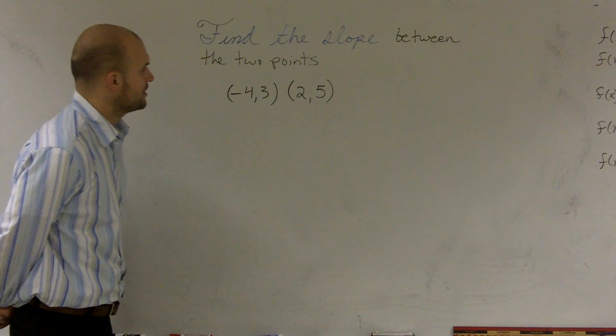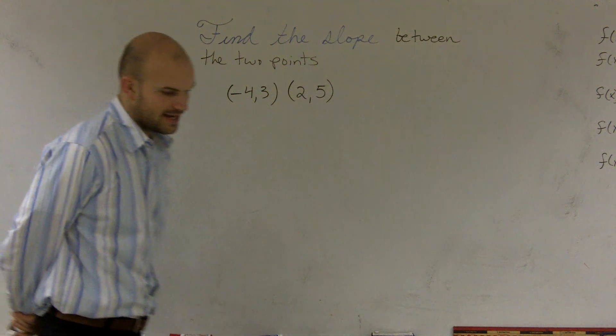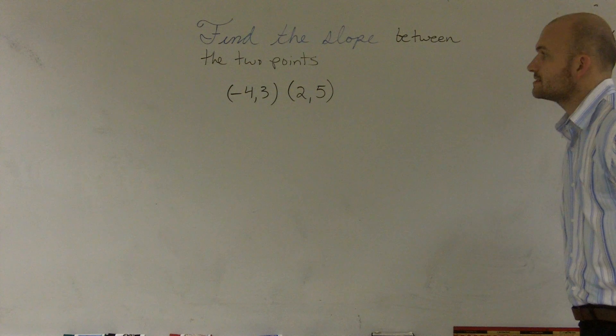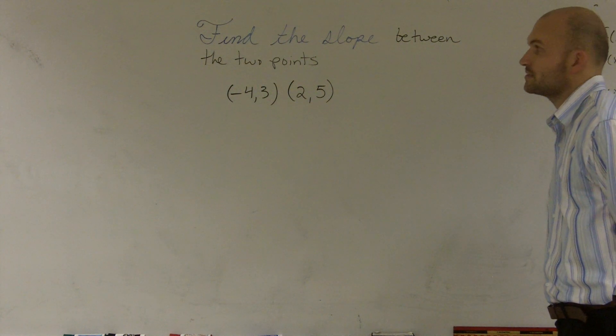Find the slope between the two points: negative 4, 3, and 2 comma 5. All right, so what we're going to do for this is I need to find the slope between the two points.